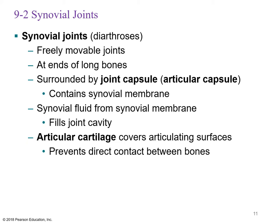Synovial joints are diarthrodial — freely movable joints. At the ends of every long bone, they are surrounded by a joint capsule, sometimes called the articular capsule. They contain a synovial membrane, which wraps around the joint and produces synovial fluid that fills the joint cavity.